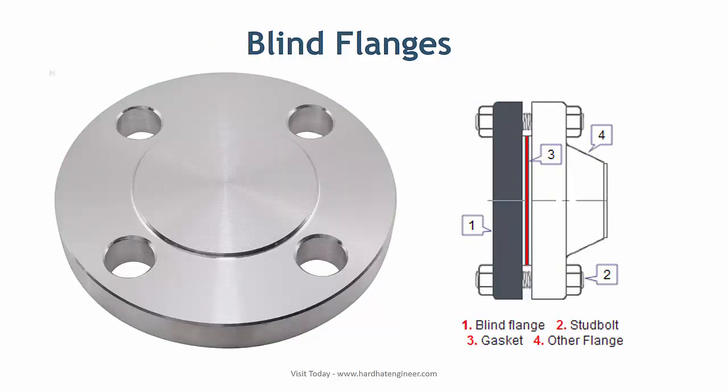The blind flange is a blank disc with bolt holes. This type of flange is used with another type of flange to isolate the piping system or to terminate the piping as an end. Blind flanges are also used as a manhole cover in vessels.